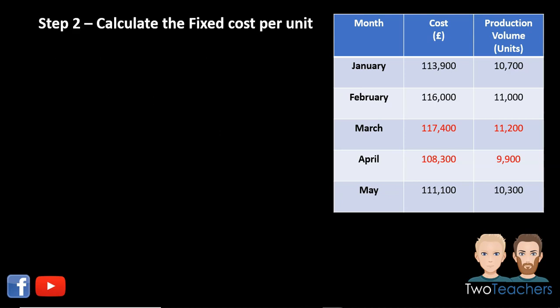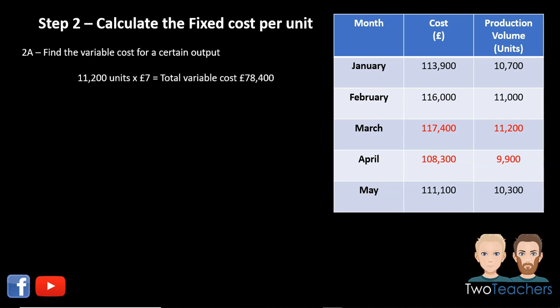Step two requires you to calculate the fixed cost. This is done by first calculating the total variable cost for any output in the table of data. For this scenario we're using 11,200 units. Using the variable cost per unit of £7 from step one, we multiply the two together, giving a total variable cost of £78,400.